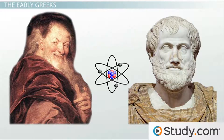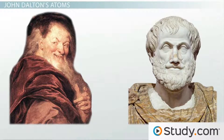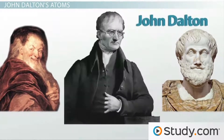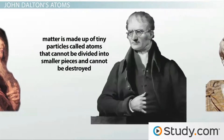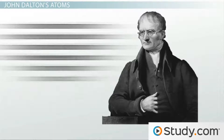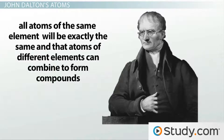So who was right? Aristotle was very convincing and did many experiments using the scientific method, so more people believed him. It wasn't until around 2,000 years later, in the early 1800s, when John Dalton came along and disproved Aristotle. Dalton said that matter is made up of tiny particles called atoms that cannot be divided into smaller pieces and cannot be destroyed. He also stated that all atoms of the same element will be exactly the same, and that atoms of different elements can combine to form compounds.